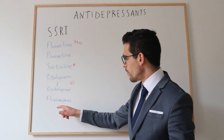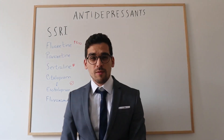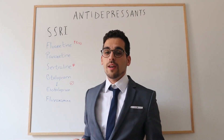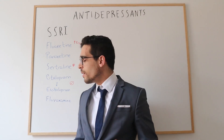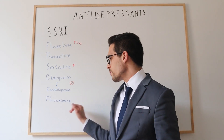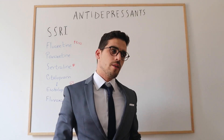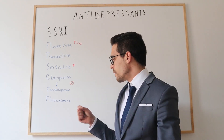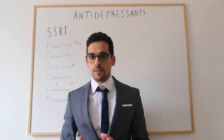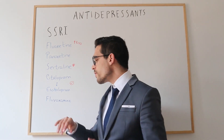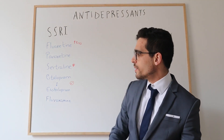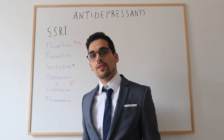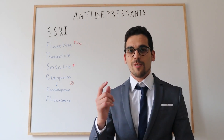And lastly we've got fluvoxamine. Fluvoxamine was actually the first SSRI to be developed. Nowadays it's not much used because it normally requires three times a day dosing and there are many side effects with it. However, sometimes it can be used for patients with obsessive compulsive disorder — OCD.